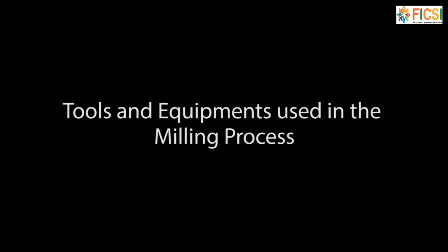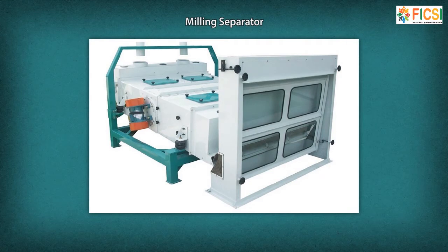Tools and Equipment used in the milling process: The Milling Separator is used for the efficient separation of large coarse material and small fine materials such as grit during the serial cleaning process.